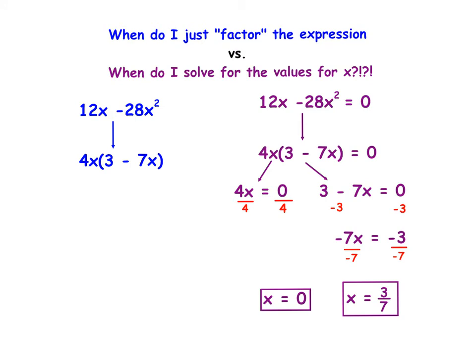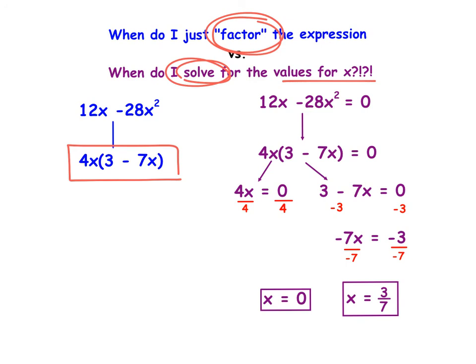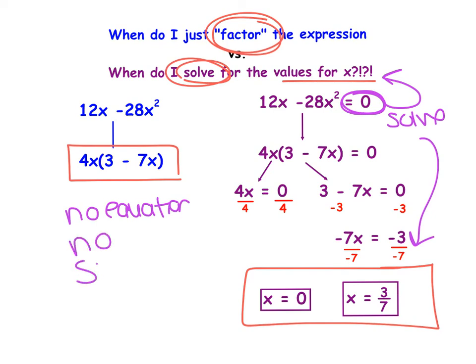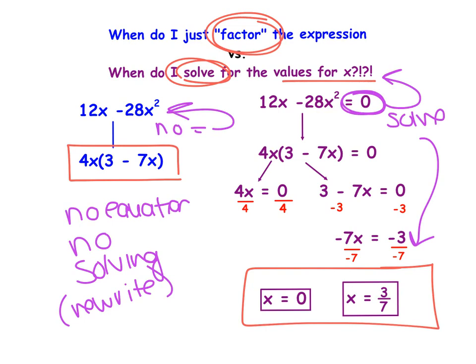The last thing to address is: when do we just factor, and when do we solve for x? If you have an equation — with an equal sign — you solve and find values for x. If there's no equation, there's no solving; all you can do is rewrite it using factoring. Be very careful: do not assume you can solve. Check whether there's an equal sign or not, and read your directions carefully.